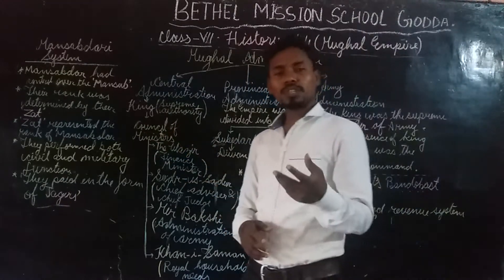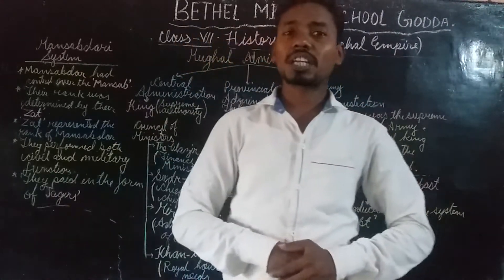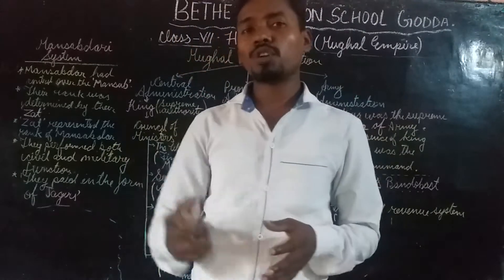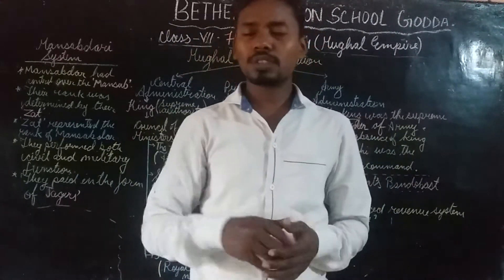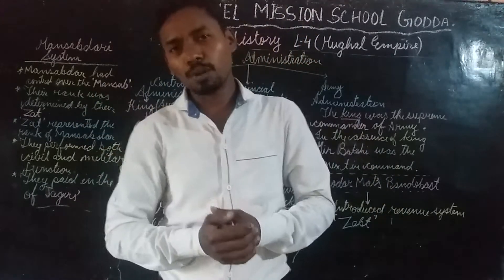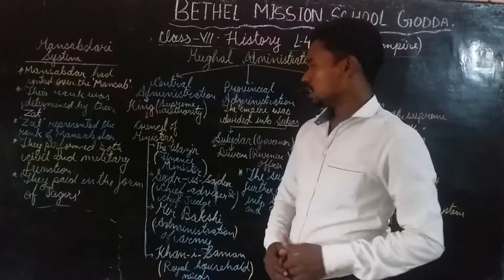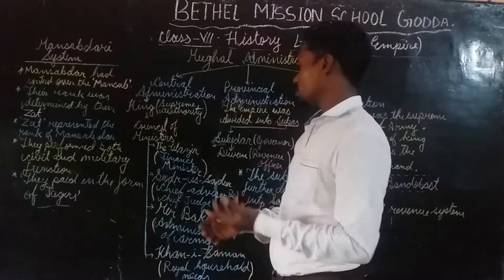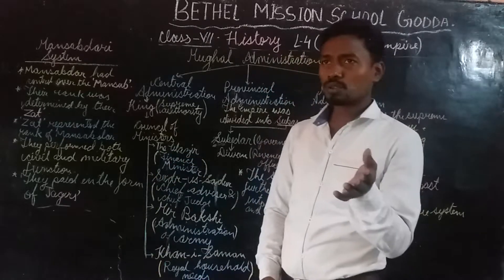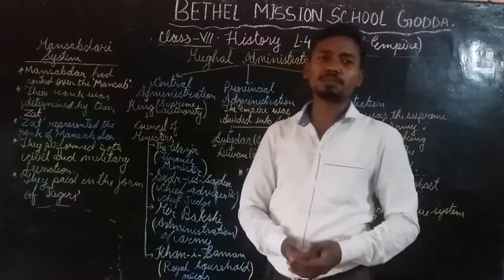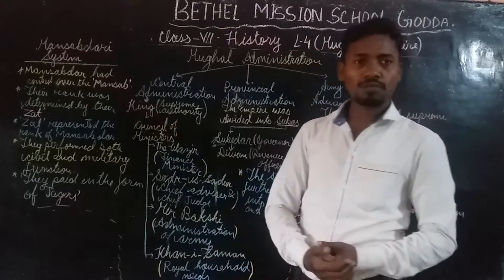There was a council of ministers — just as in the present time we have the cabinet ministry, where all have different portfolios and work according to the post provided to them, the same idea was used in that time also. The most important of the ministers was the Wazir. The Wazir can also be known as the current finance minister.